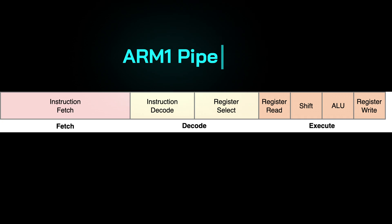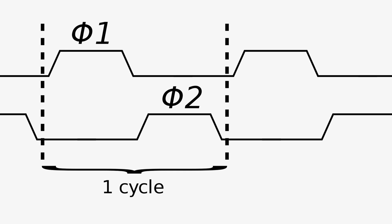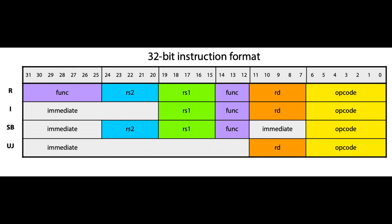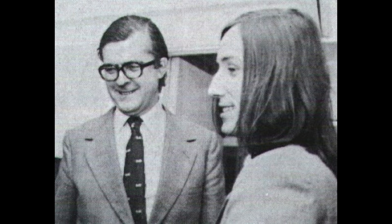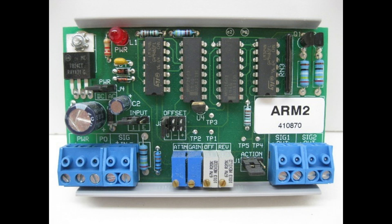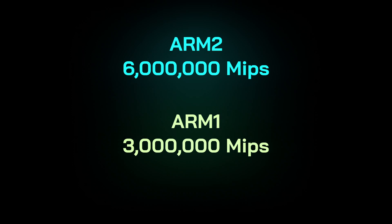Aside from the basics of RISC, the ARM-1's pipelining allowed for it to start executing the next instruction before the previous one was even completed. With a 32-bit instruction set, the ARM-1 performed operations with a higher level of precision and efficiency compared to many other processors in the market. Although a step in the right direction, Ferber and Wilson continued to improve by building the ARM-2 core, which featured an average of 6 million instructions per second, making a 2x improvement from the ARM-1.